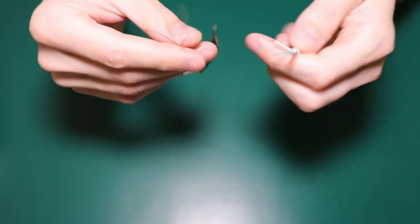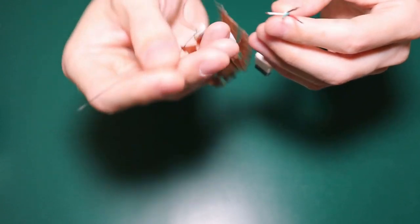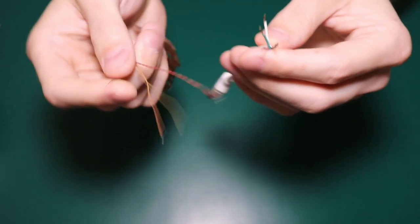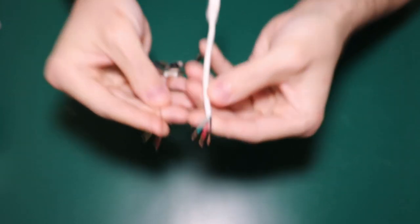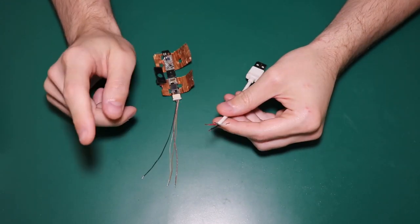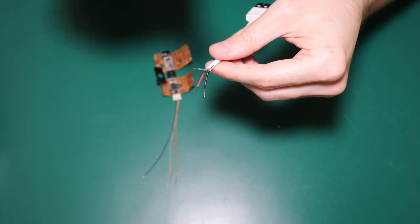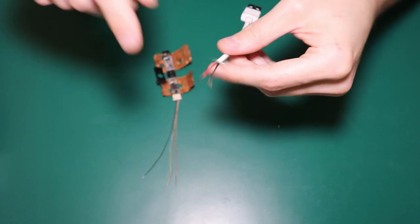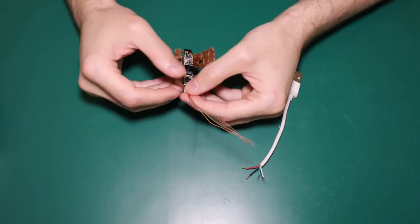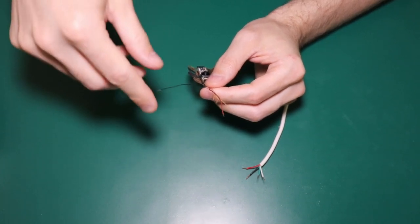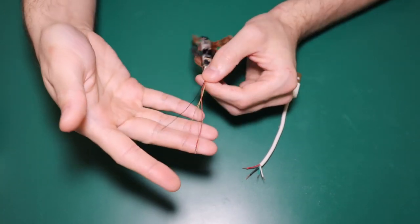So how do you connect these? As you can see this one has five wires and this one the USB cable has only four. It's not that difficult. On the USB cable you have five volts, ground, and the two signal wires.